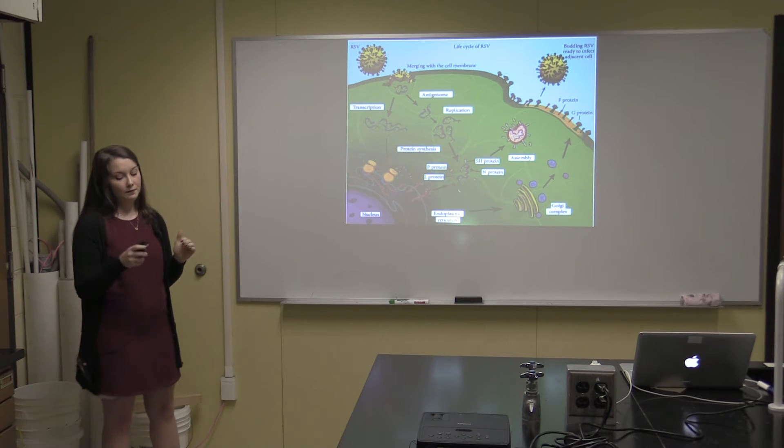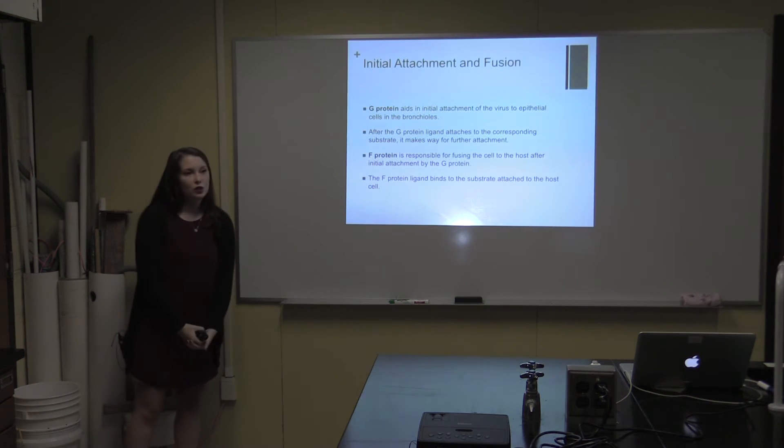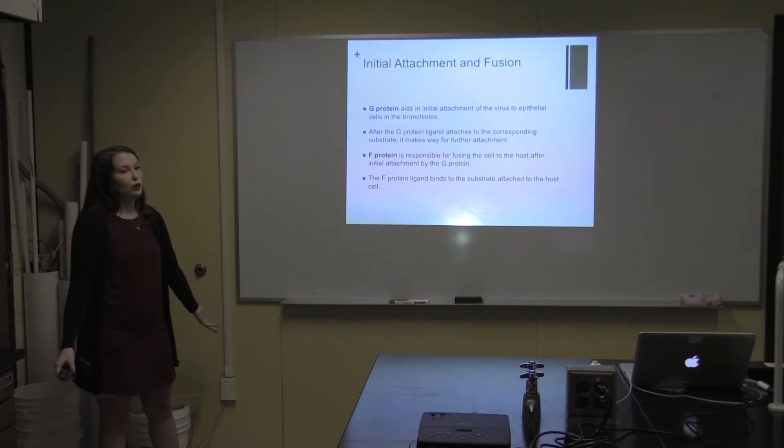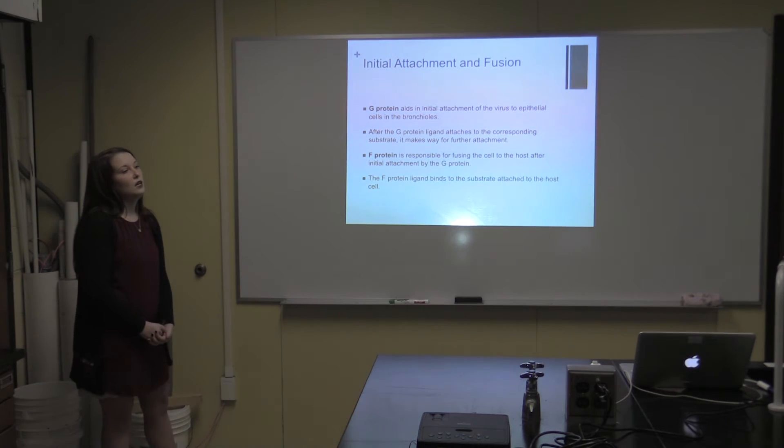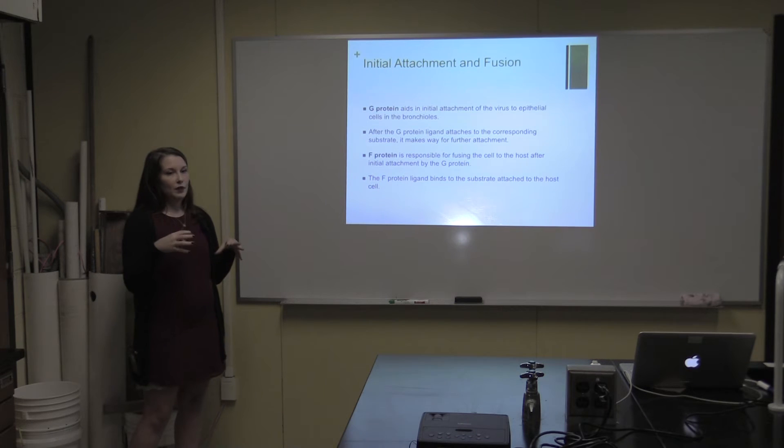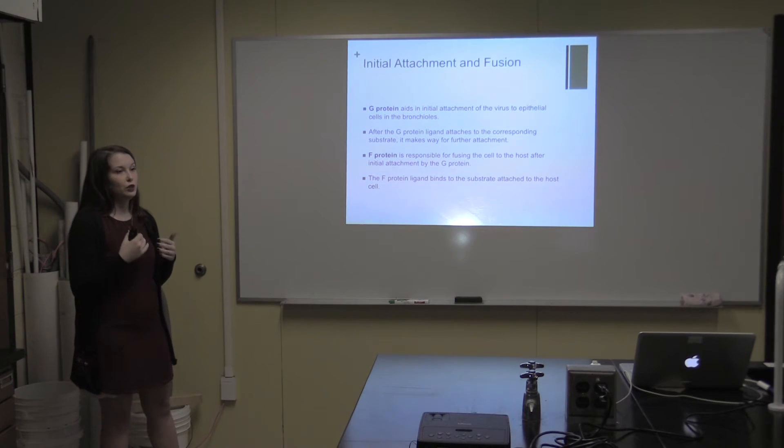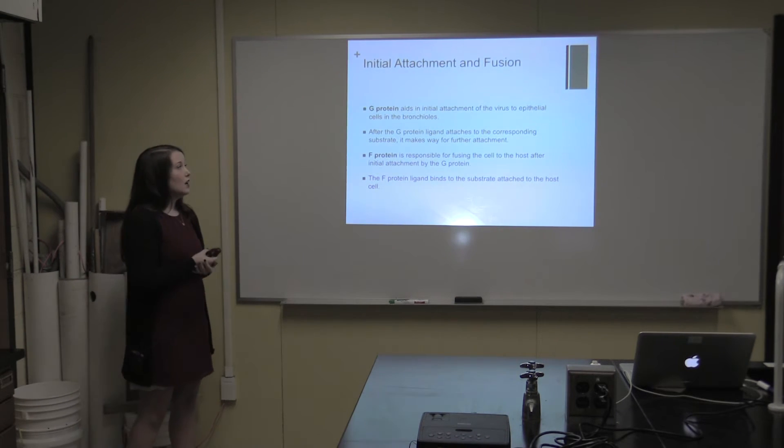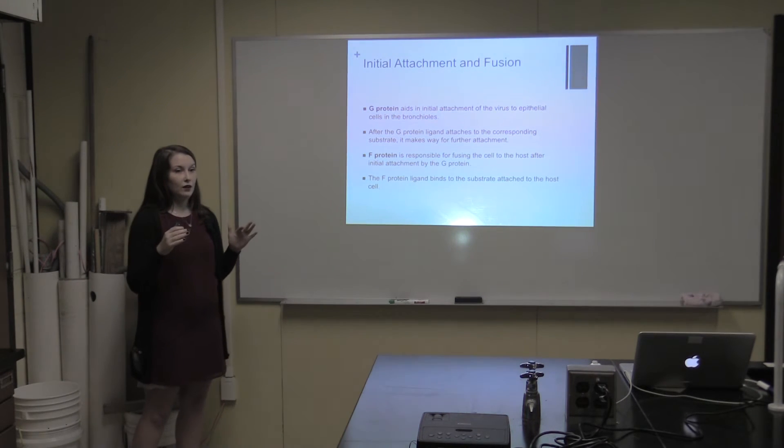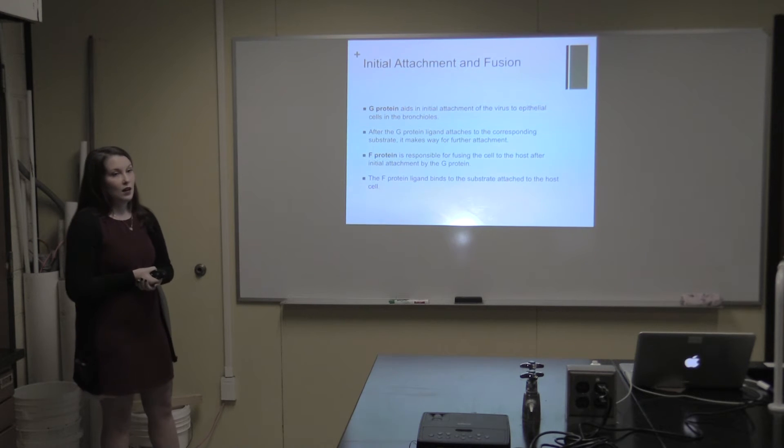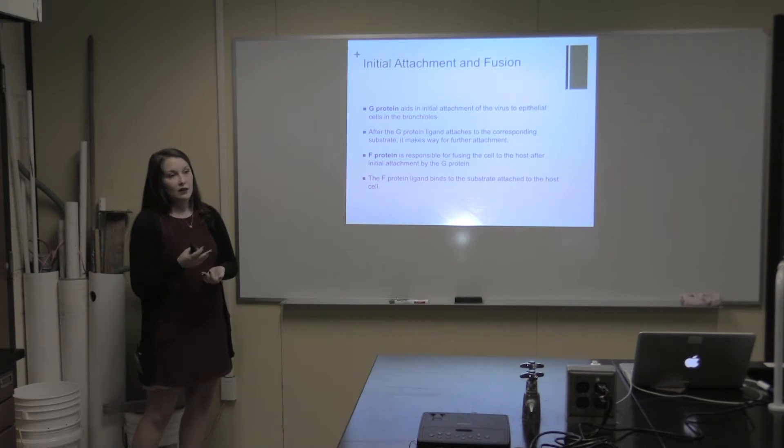Initial attachment and fusion are vital for the survival of the virus. The glycoprotein is the attachment protein—it attaches to the epithelial cells of bronchioles, which is your upper respiratory tract. Once that is attached, the fusion proteins come along and attach right beside it. Once those two attachments are made, the cell recognizes the virus and lets it in, and then it starts to replicate and exits.